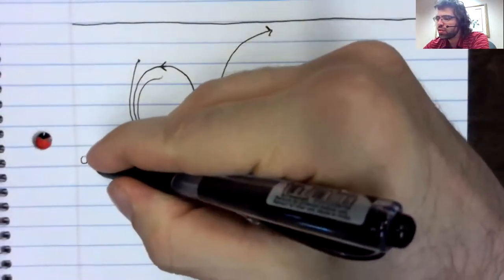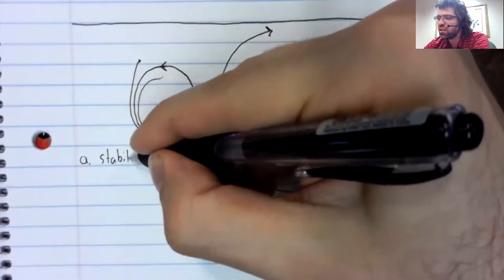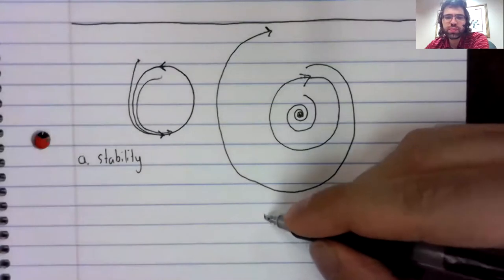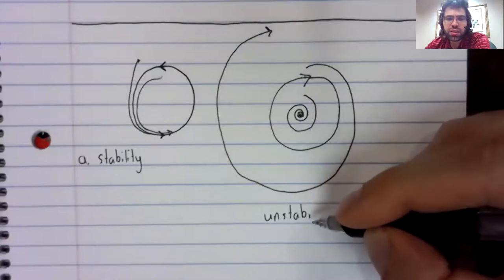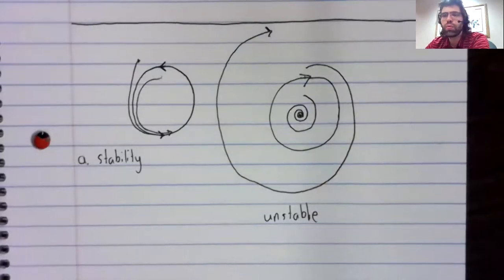So, we have asymptotic stability of orbits, and we have instability of orbits.